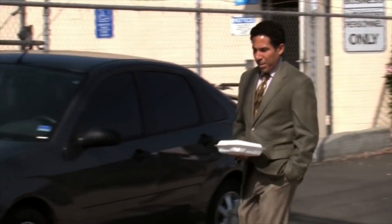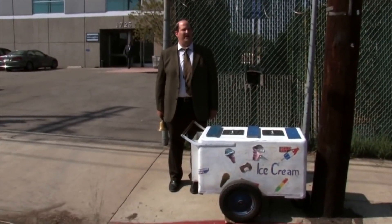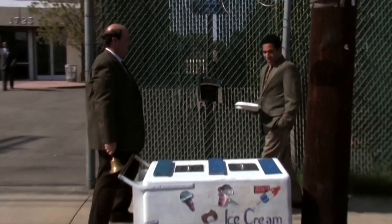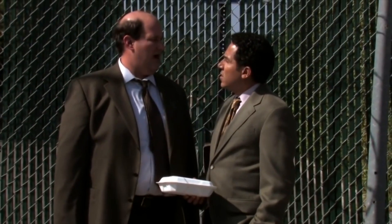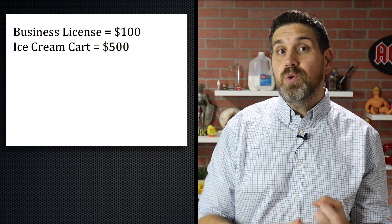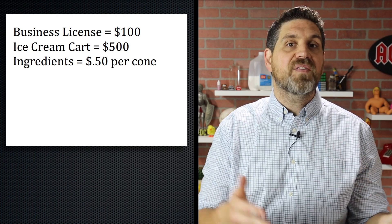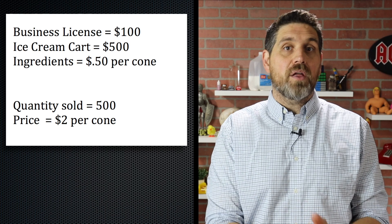The best way to explain this stuff is with an example. So let's assume that Kevin starts a business selling ice cream cones. He has fixed costs, like the cost for his business license and the cart, and he has variable costs, like the cost of ingredients and cones. The business license was $100, the used cart was $500, and the ingredients and cone cost him 50 cents per ice cream cone. And let's assume he sold 500 cones for $2 each.